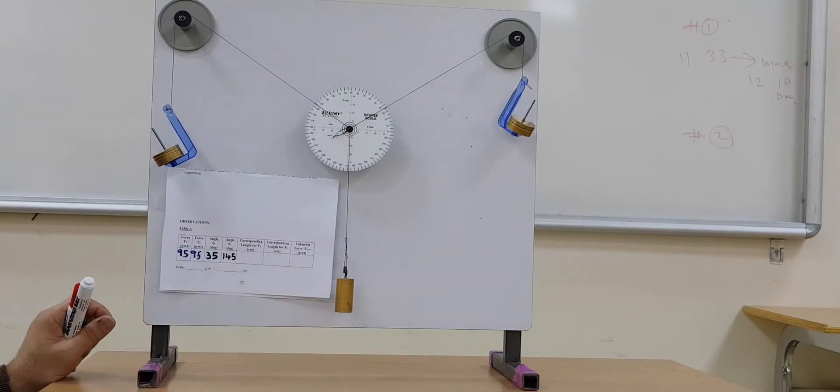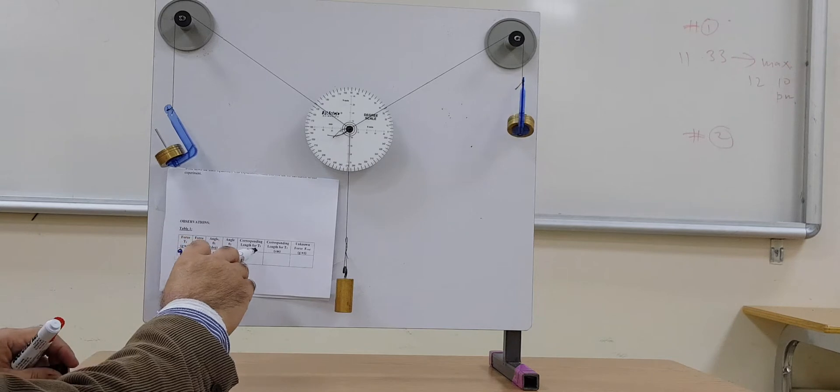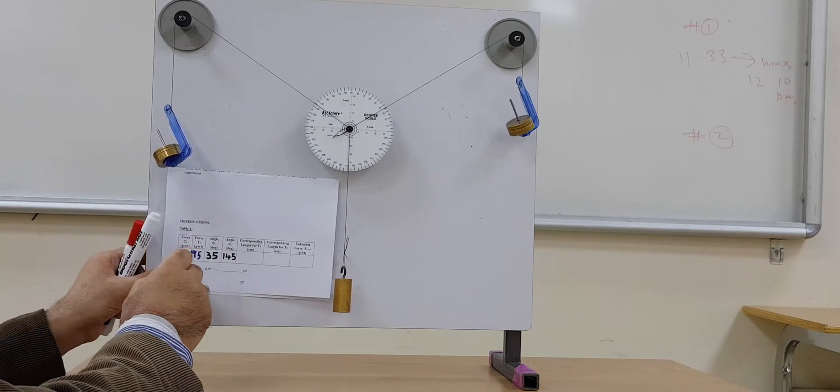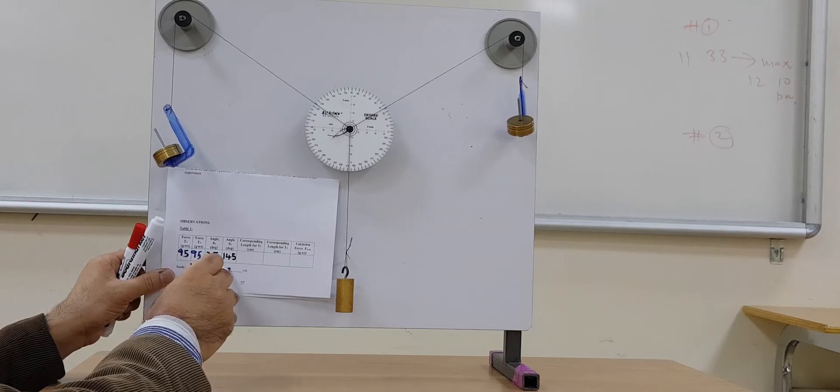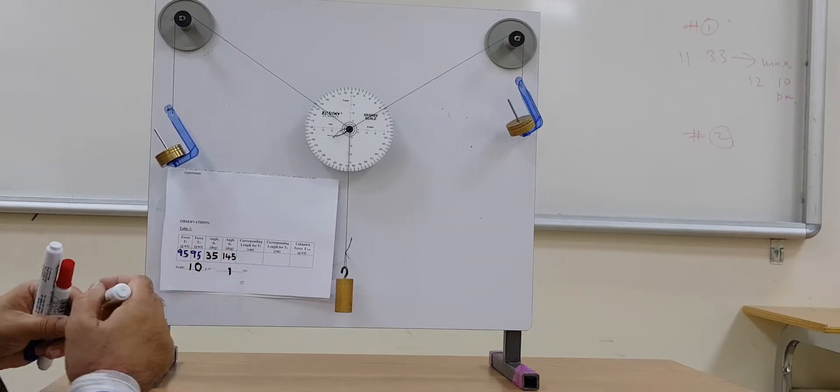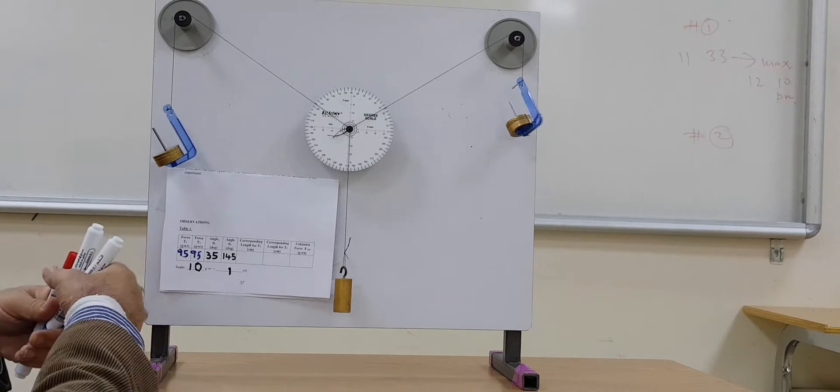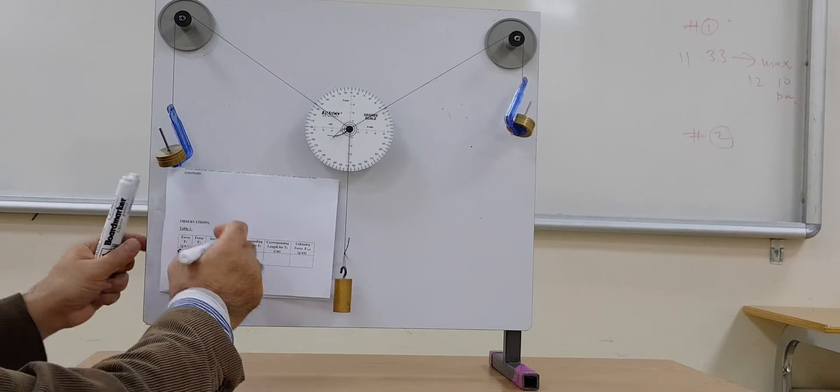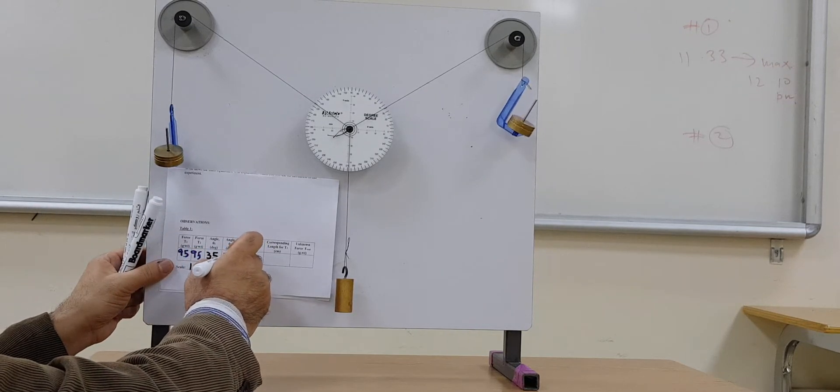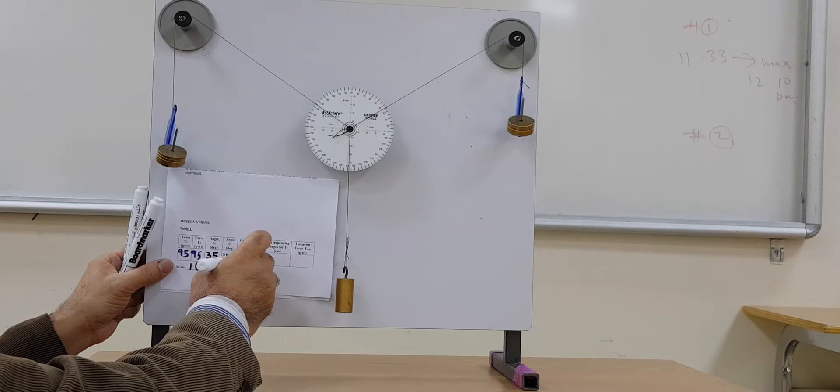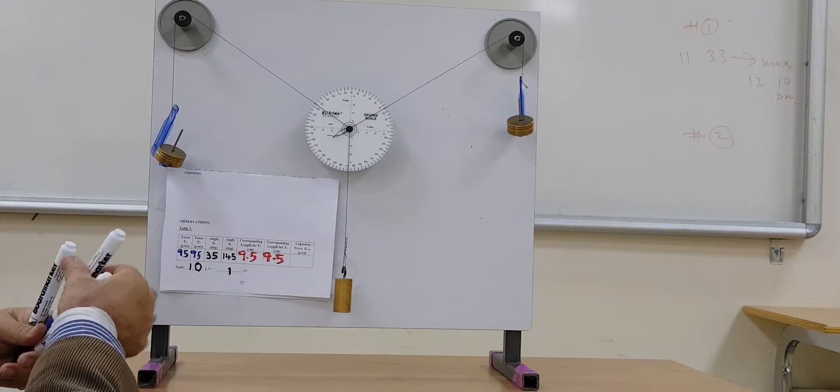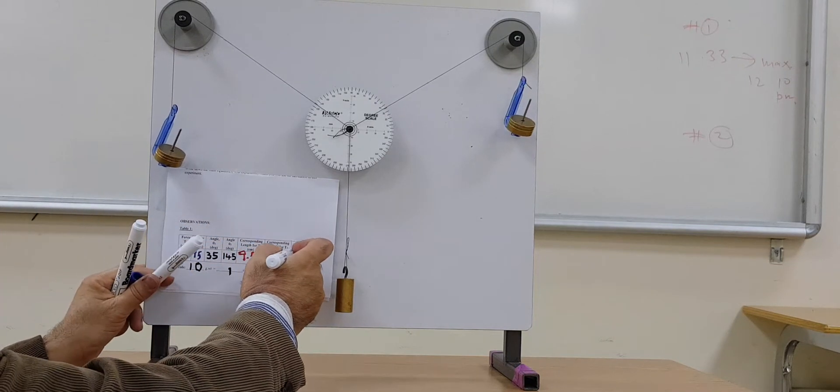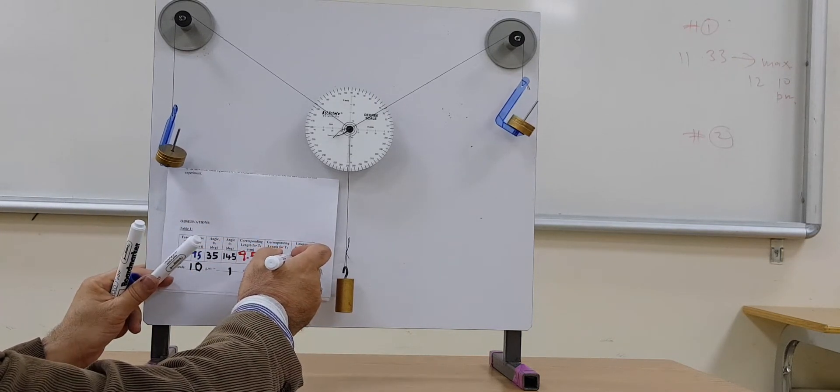Now, corresponding length according to the scale: scale is 10 grams equals 1 centimeter, so it will be 95 by 10, which is 9.5 centimeters.